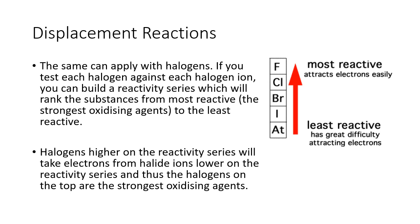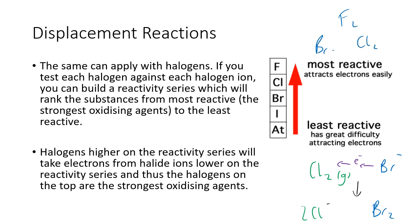The same concept applies to the halogens. If you test each halogen against a halide ion, you can build a reactivity series ranking substances from most to least reactive. Halogens higher on the reactivity series will take electrons from halide ions lower on it. For example, Cl₂ gas will take electrons from Br⁻. Remember that all halogens are diatomic molecules in their elemental form: F₂, Cl₂, Br₂, I₂.